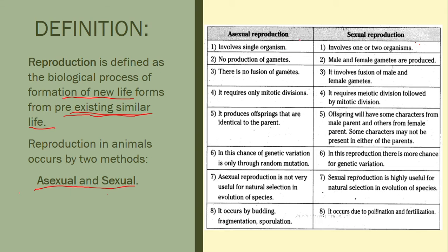Asexual reproduction involves a single organism, meaning there is no production of gametes — no male or female. Because there is no fusion of gametes, there is no meiosis, only mitosis. All new offspring will therefore be identical to the parent, with no genetic variation. It generally occurs by budding, fragmentation, and sporulation.